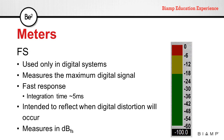FS, or full-scale meters, are very similar to peak meters, but they are used only on digital systems. They have a very fast response with an integration time of about 5 milliseconds, and they are intended to reflect when digital distortion will occur. Their measurements are always in dBFS.